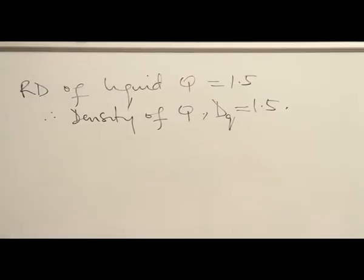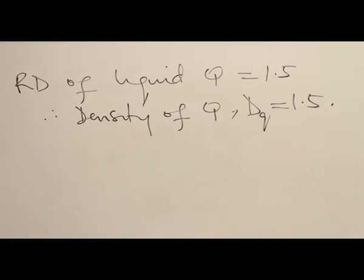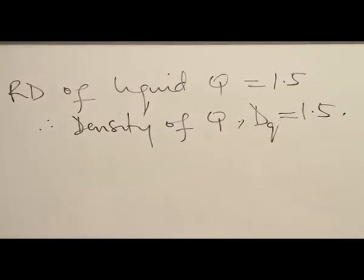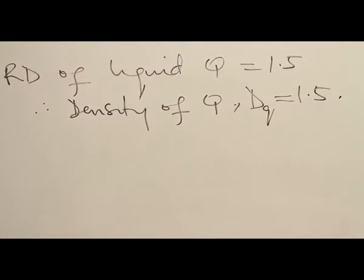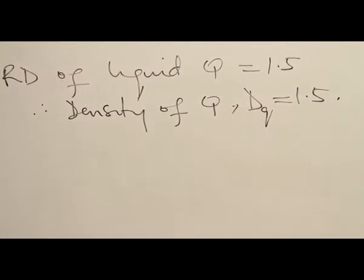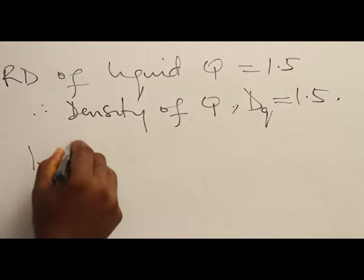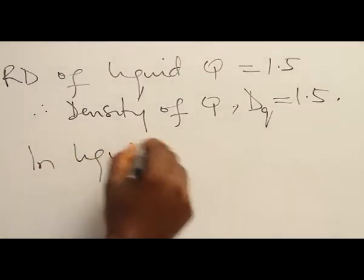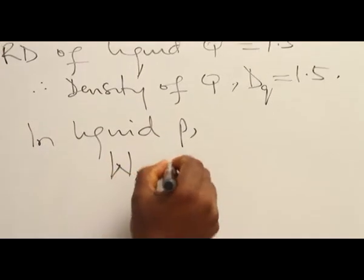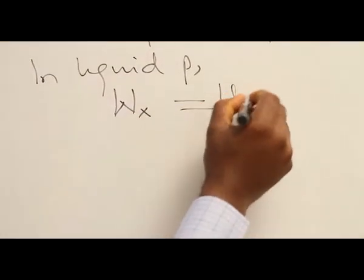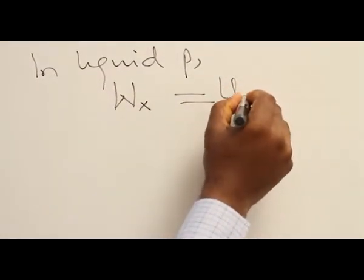The weight of the object that is floating, in both cases, is equal to the upthrust experienced in each of the liquids. So, in liquid P, weight of object X equals upthrust experienced in that P.